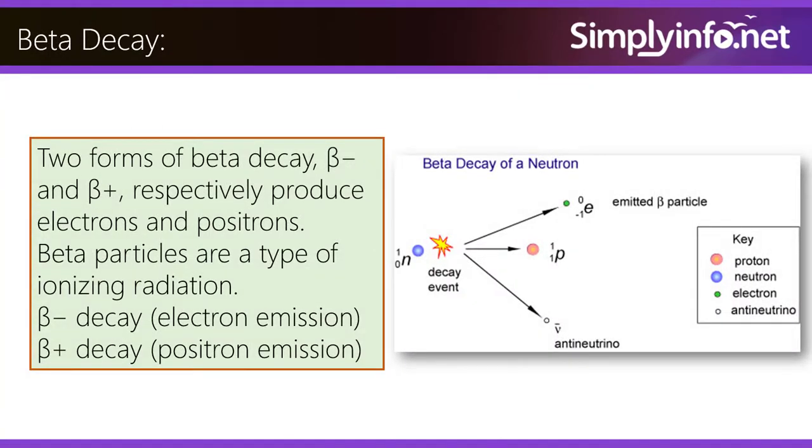Beta decay. Two forms of beta decay, beta negative and beta positive, respectively produce electrons and positrons. Beta particles are a type of ionizing radiation.